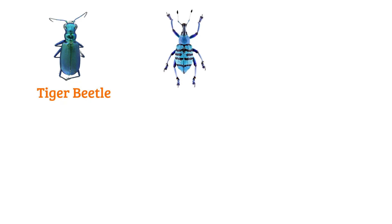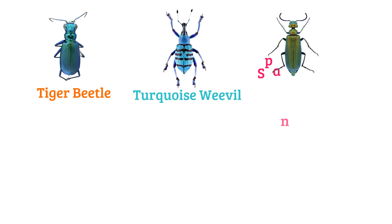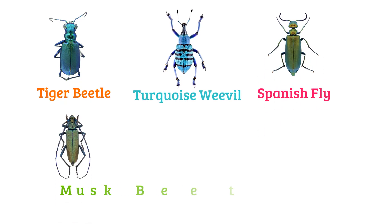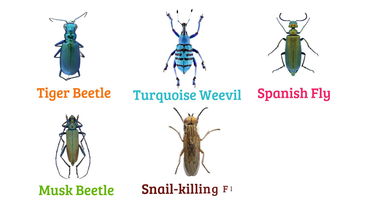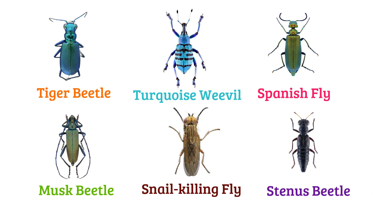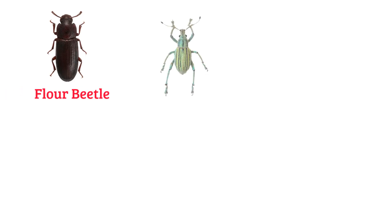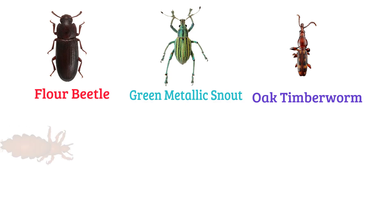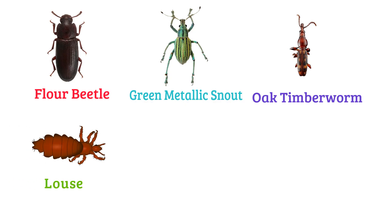Tiger beetle, turquoise weevil, Spanish fly, musk beetle, snail-killing fly, stinus beetle, flower beetle, green metallic snout, oak timber orb weaver, louse.